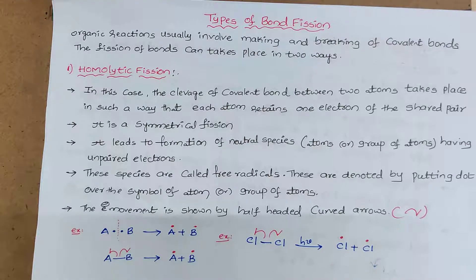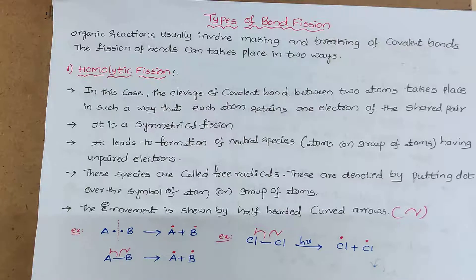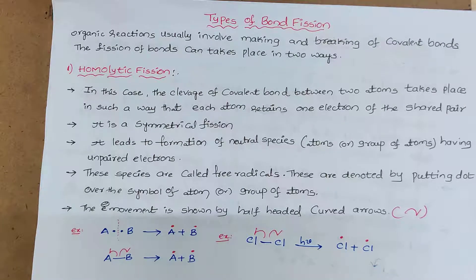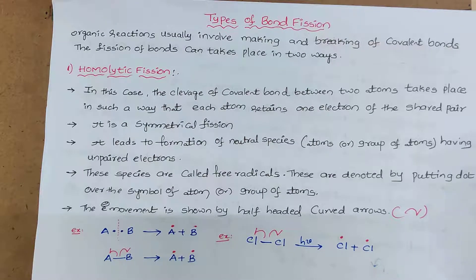In homolytic cleavage, the cleavage of a covalent bond between two atoms takes place in such a way that each atom retains one electron of the shared pair. Whenever a covalent bond is broken between two atoms, the electrons are equally shared by the two atoms. That's why this cleavage is called symmetrical fission. Because of this cleavage, neutral species are formed which have unpaired electrons. These species are called free radicals, generally denoted by putting a dot over the symbol of the atom or group of atoms. The electron movement is shown by a half-headed curved arrow.